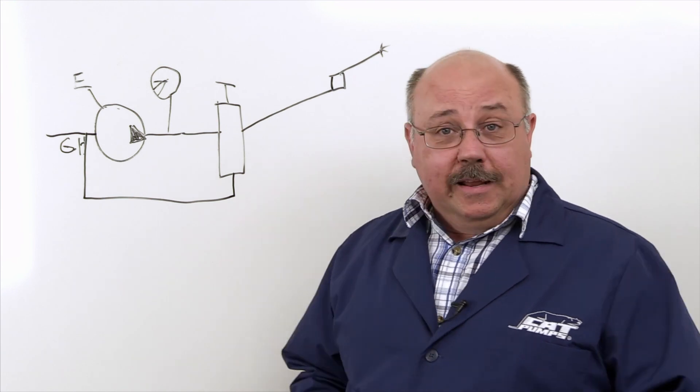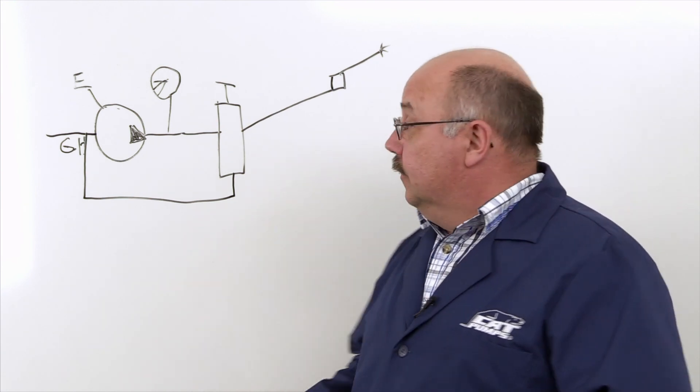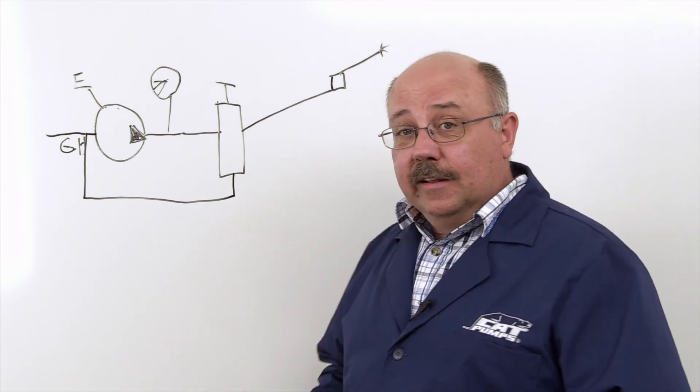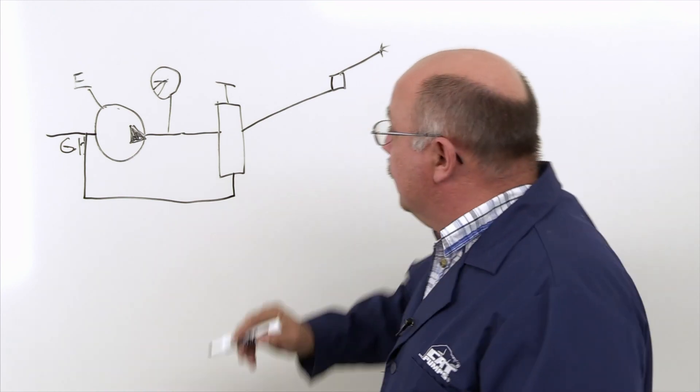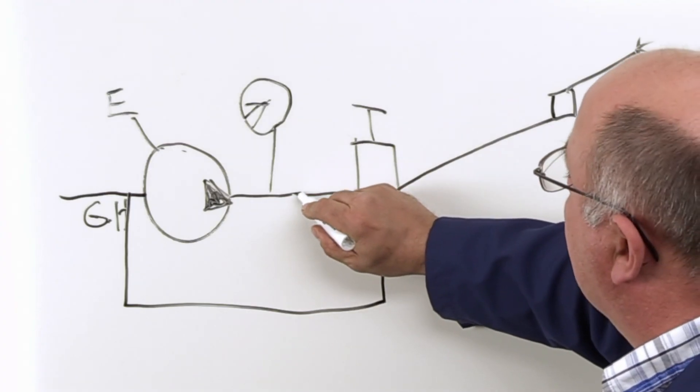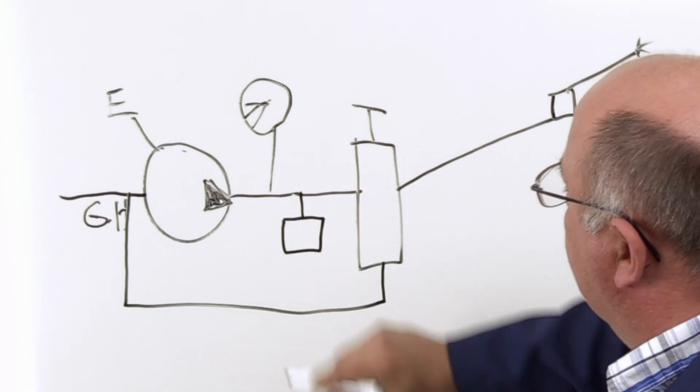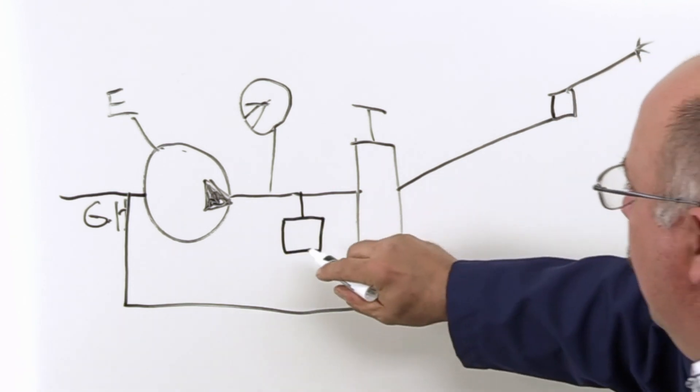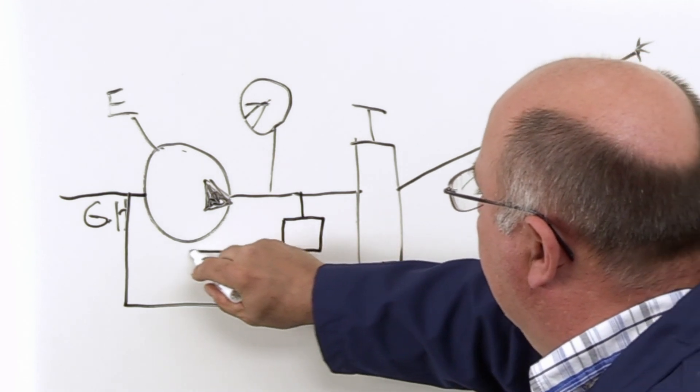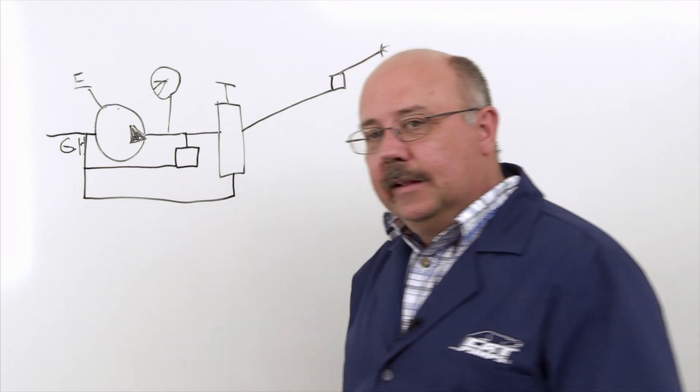So to remedy this dilemma, somebody invented an easy start valve. And what it is, it's a small device that gets added into the discharge line, and for ease and plumbing, I'm going to draw it as a little square now, and then a line goes back to the inlet as well.